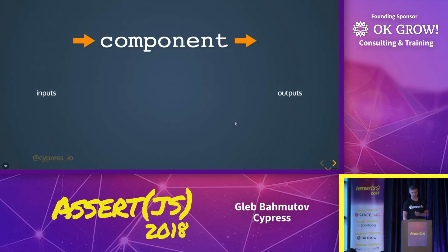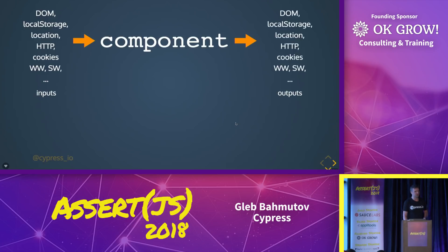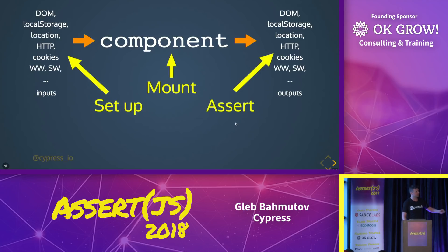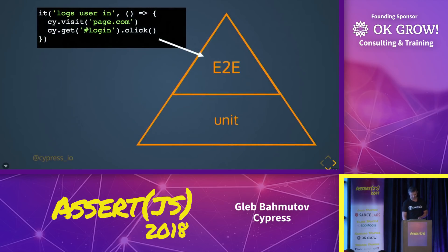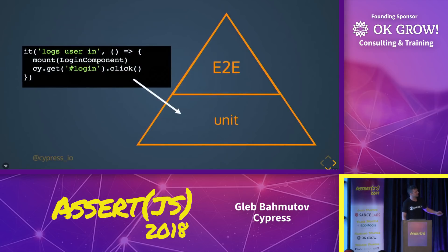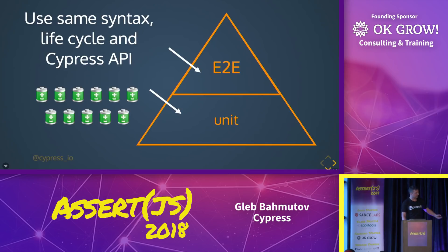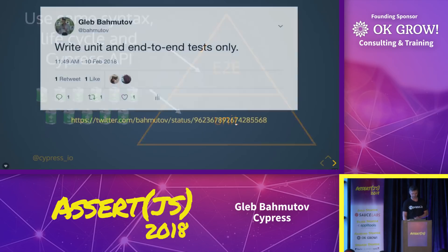If you look at components in the front-end world, they get inputs from various sources — from the network, from the DOM, from local storage, from web workers, service workers, from cookies. And they produce results that could go anywhere: storage, DOM, everything. If we set up these inputs, run our component, and make assertions over what the component is writing to, it still is a unit test. So our testing pyramid is really two levels: a lot of end-to-end tests and a bunch of unit tests. I have my full Cypress API, batteries included, everything is there.